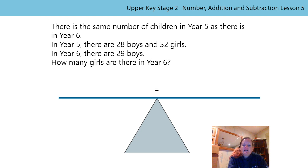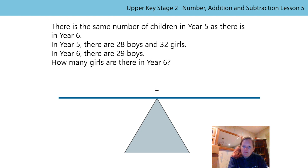There is the same number of children in Year 5 as there is in Year 6. In Year 5, there are 28 boys and 32 girls. In Year 6, there are 29 boys. How many girls are there in Year 6? Pause the video, read the question for a second time so you've got all the information that you need and have a go. Hint: you should be able to do this with very little calculating — maybe use that balance representation that I've left there for you. When you've had a go, start the video again.